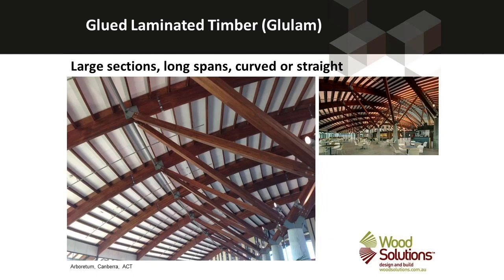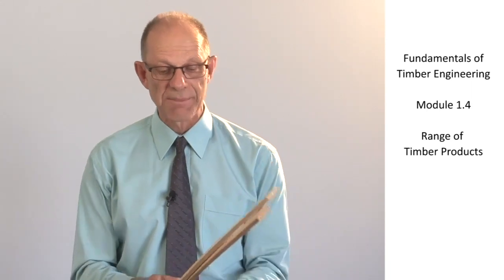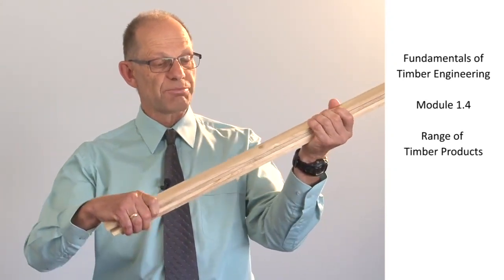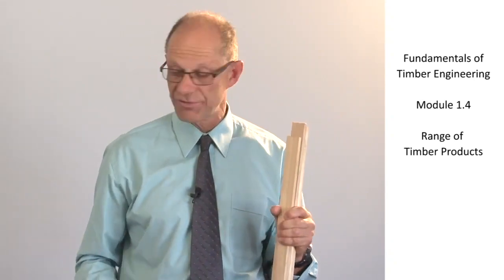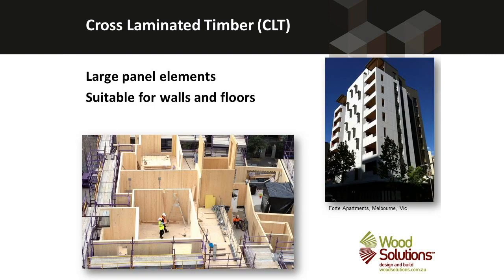If we've got large spans to cover, we need larger depths of section than we can get from sawing timber directly out of trees, so we use a series of engineered products. The first engineered product is glued laminated timber, made by gluing pieces of sawn timber together to form deep and long sections. They can also be made in a curved shape — curved glued laminated timber is shown on this slide. Cross laminated timber panels are slab-type elements made up of sawn pieces of timber all glued together to form large deep rectangular slabs.